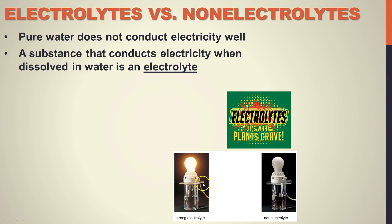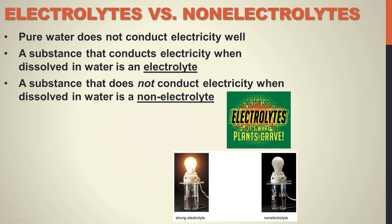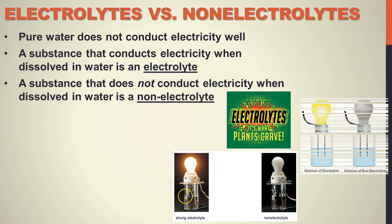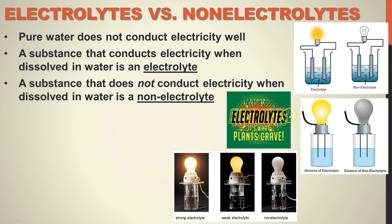When you dissolve something like salt in water, that light bulb is going to light up. When those substances go in, they dissociate, and electricity can flow through those ions. Anything that does not conduct electricity when dissolved in water is called a non-electrolyte; if it does, it's an electrolyte. In an electrolyte solution, electricity is conducted and the light bulb lights up. In a non-electrolyte, there is no conduction of electricity and the light bulb does not light up.